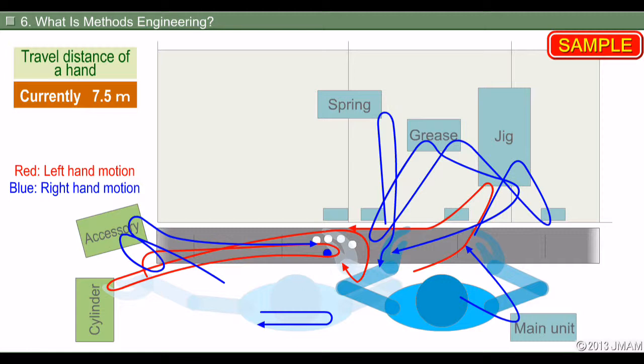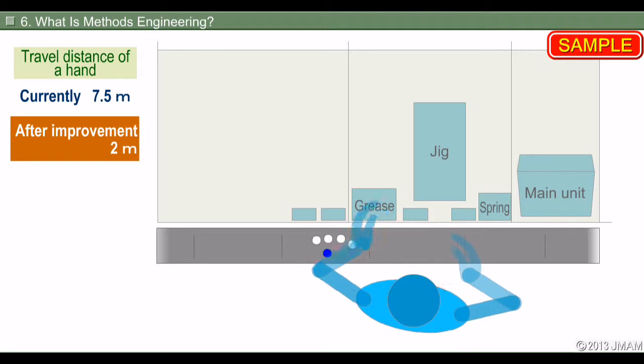In this case, the travel distance of the right and left hands is reduced from 7.5 meters to 2 meters, and the time spent on the process was reduced from 18 seconds to 6 seconds.